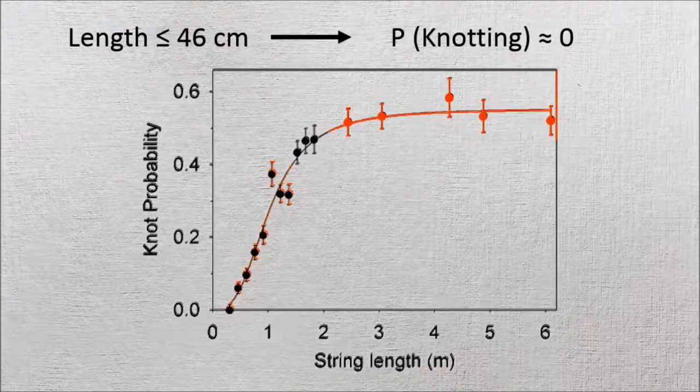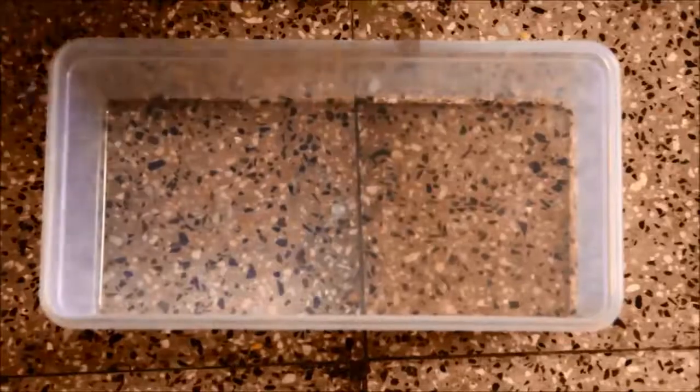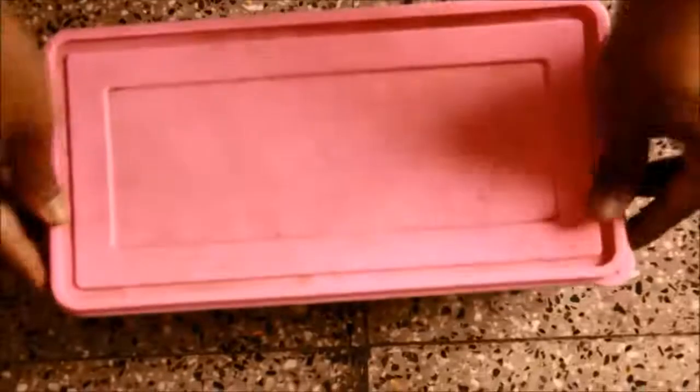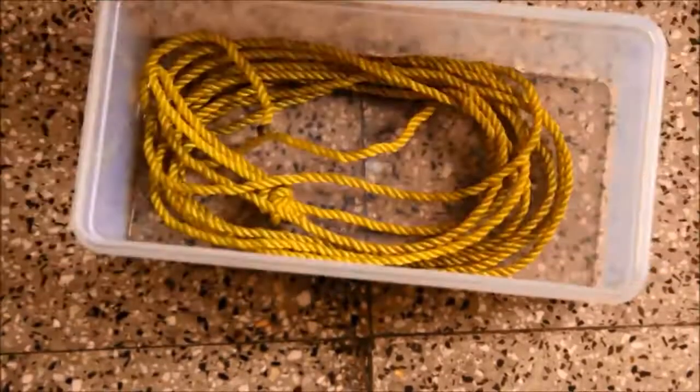With a cord longer than that, the probability only increased up to a certain size. Strings longer than 150 cm wouldn't form knots roughly 50% of the time because the cord wedges itself inside the shape of the box and prevents further tangles.